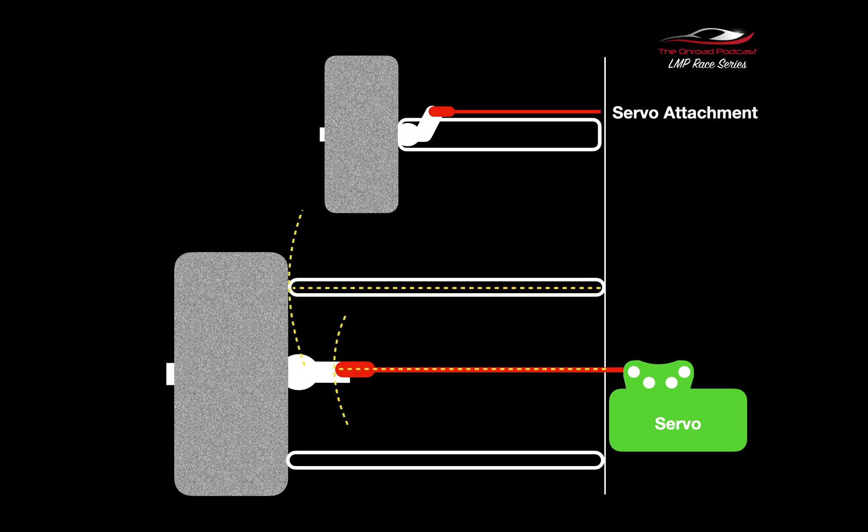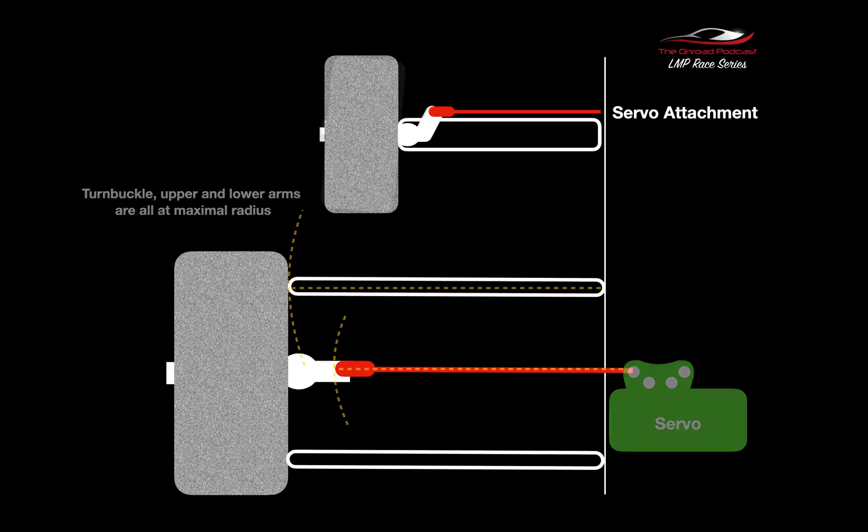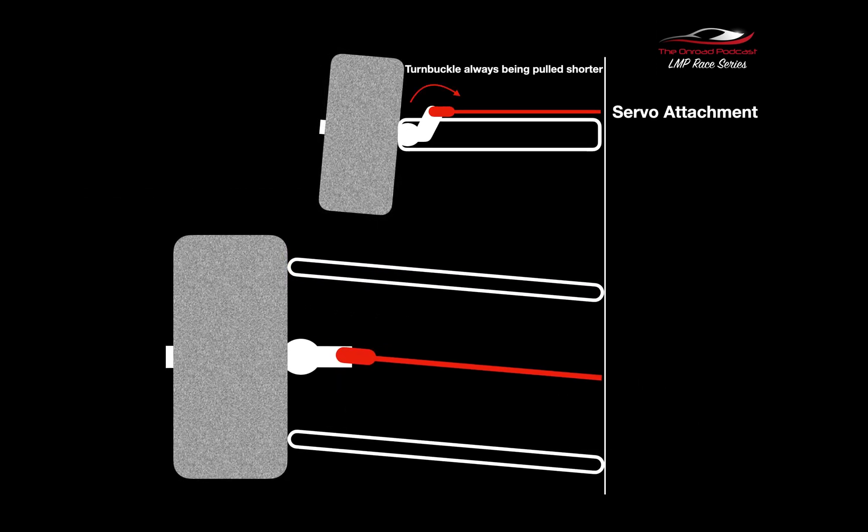When the turnbuckle is horizontal, because it's on its outside radius or the widest part of its radius, they're all at maximum. When the wheel starts to move, when the wheel moves up on the lower image, when it's going over a bump effectively.